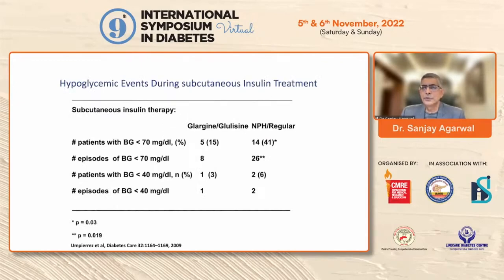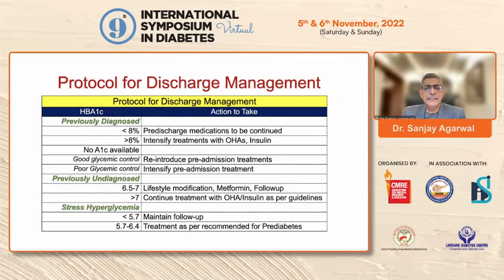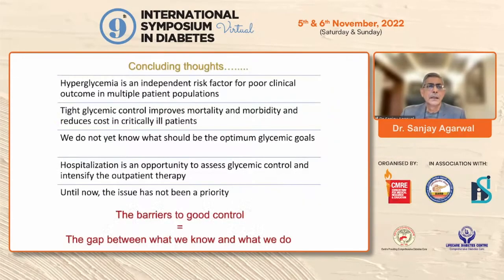For discharge recommendations: well-controlled patients return to their original prescription. Patients who were uncontrolled at hospitalization should have treatment intensified. Previously undiagnosed patients should have HbA1c assessed to guide management. Patients who developed stress hyperglycemia need close follow-up because 30% may eventually develop diabetes. In conclusion, hyperglycemia is an independent risk factor for poor clinical outcomes, and tight glycemic control improves both mortality and morbidity.